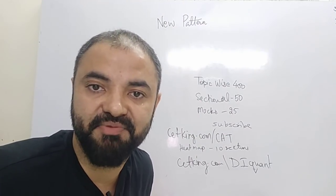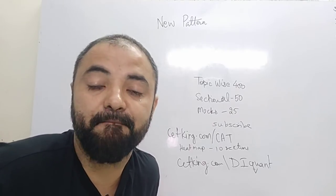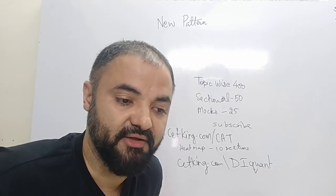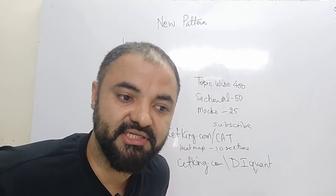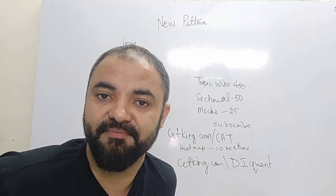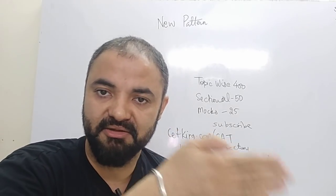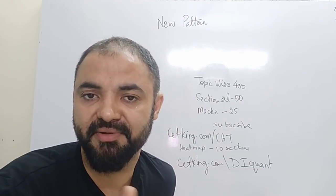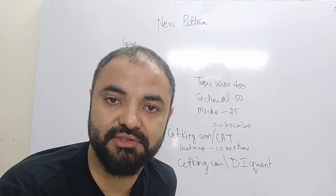Hi guys, if you have checked the last year CAT paper, you will be surprised to see a PNC-based DI in the CAT section — 4 questions which are PNC-based DI. This is a new trend which has come in the CAT exam. For the last 3 years now they have introduced a Quant-based DI, which is basically picking up a question of time-speed-distance, PNC, probability, or time and work and converting it into a DI question.